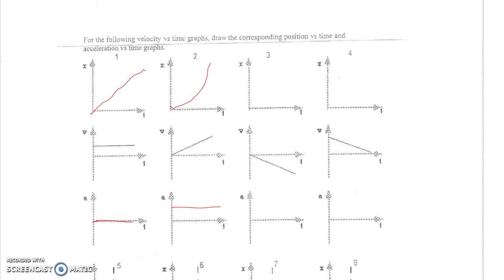In this third situation, velocity starts at zero and then gets more and more negative at a constant rate. So our position is going to get further and further away — bigger and bigger but in the negative direction. Initially displacement is very small around zero, but our displacement is in the negative direction over time, and it gets bigger and bigger — our speed gets bigger but in the negative direction. So acceleration is a constant negative value, since velocity starts near zero and gets more and more negative at a constant rate.